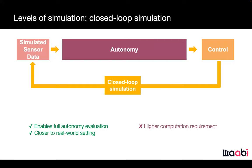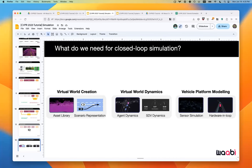Closed-loop simulation is closer to the real-world setting with the full autonomy system in the loop, but it has higher computational requirements because you need to simulate sensor data. Think of a closed-loop simulation system as a high-fidelity, complex video game for self-driving systems. It breaks down into three parts: virtual world creation, virtual dynamics, and vehicle platform modeling.